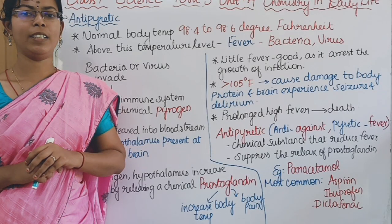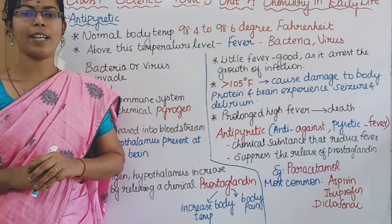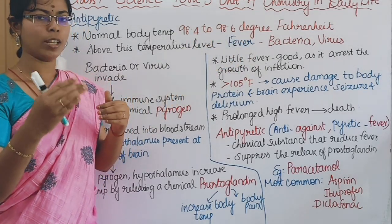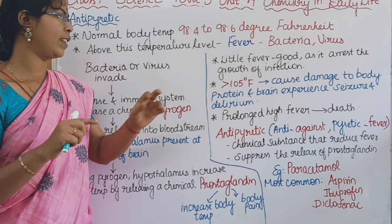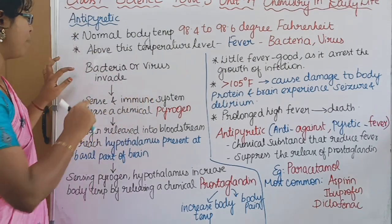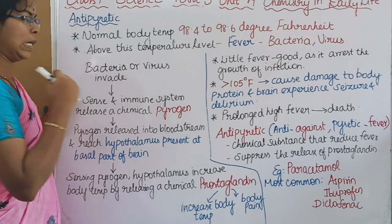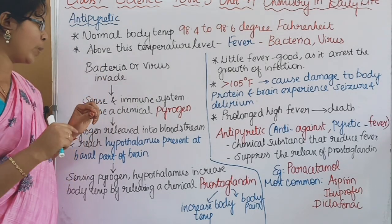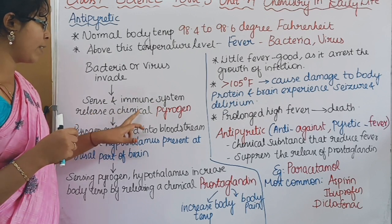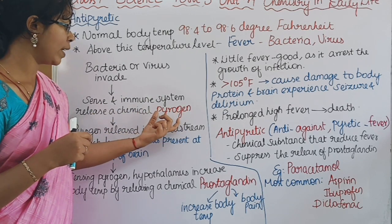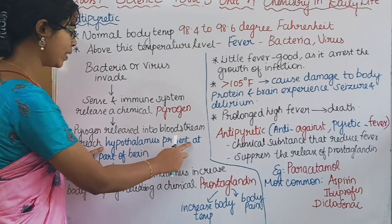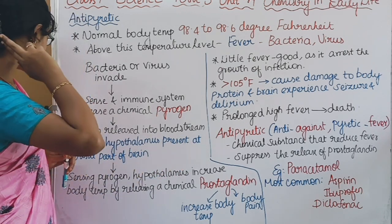Next, antipyretics. The normal body temperature range is 98.4 to 98.6 degrees Fahrenheit. When bacteria or a virus invades the body, the immune system responds and a chemical called pyrogen is released into the bloodstream. This pyrogen will reach the hypothalamus, which is present at the basal part of the brain.